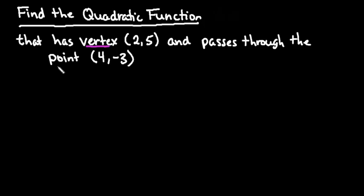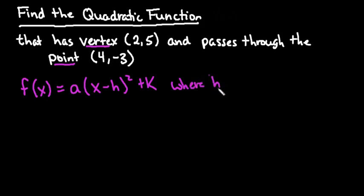Anytime you are given the vertex and a point, that tells you you want to use the vertex form of an equation, which is f(x) = a(x - h)² + k, where h and k represent the vertex.